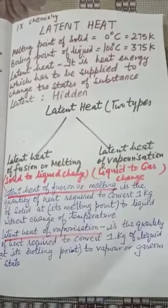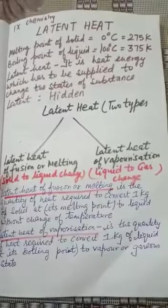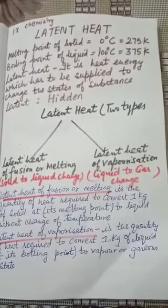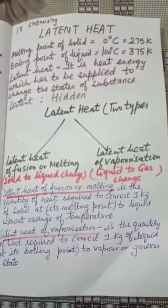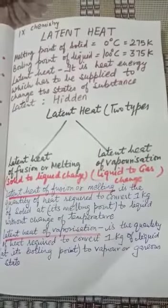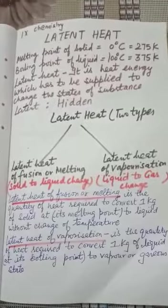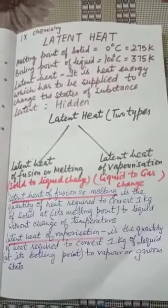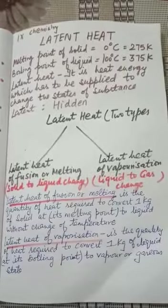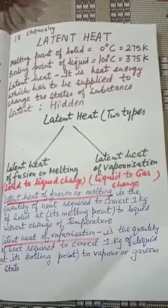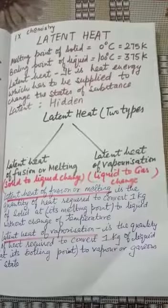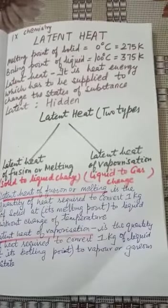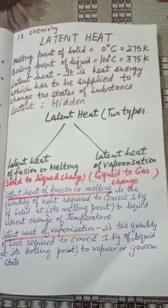Now, let us understand latent heat of fusion or melting by taking the example of melting of ice. Ice is a solid. At 0 degrees Celsius, on heating, ice starts melting to form water. The heat which is going into ice is not increasing the temperature, as it is used up to break the force of attraction between the particles, so they become loose and form liquid water.